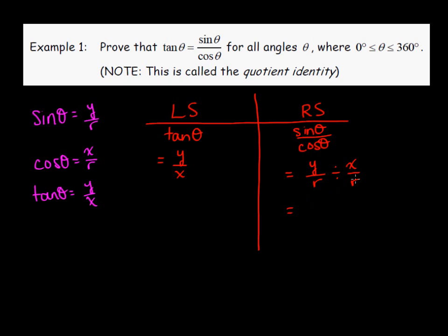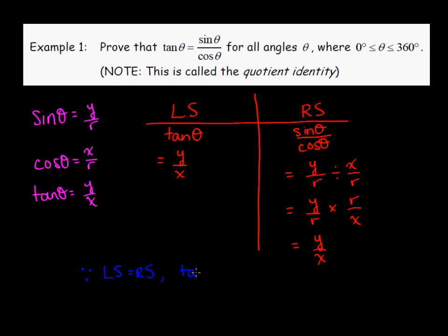In order to divide, we take the reciprocal and multiply: y over r times r over x. Here we have r divided by r, which is 1, so we end up with y over x. Since the left side equals the right side in our check, we know that the statement we were asked to prove — tangent theta equals sine theta over cosine theta — is true.